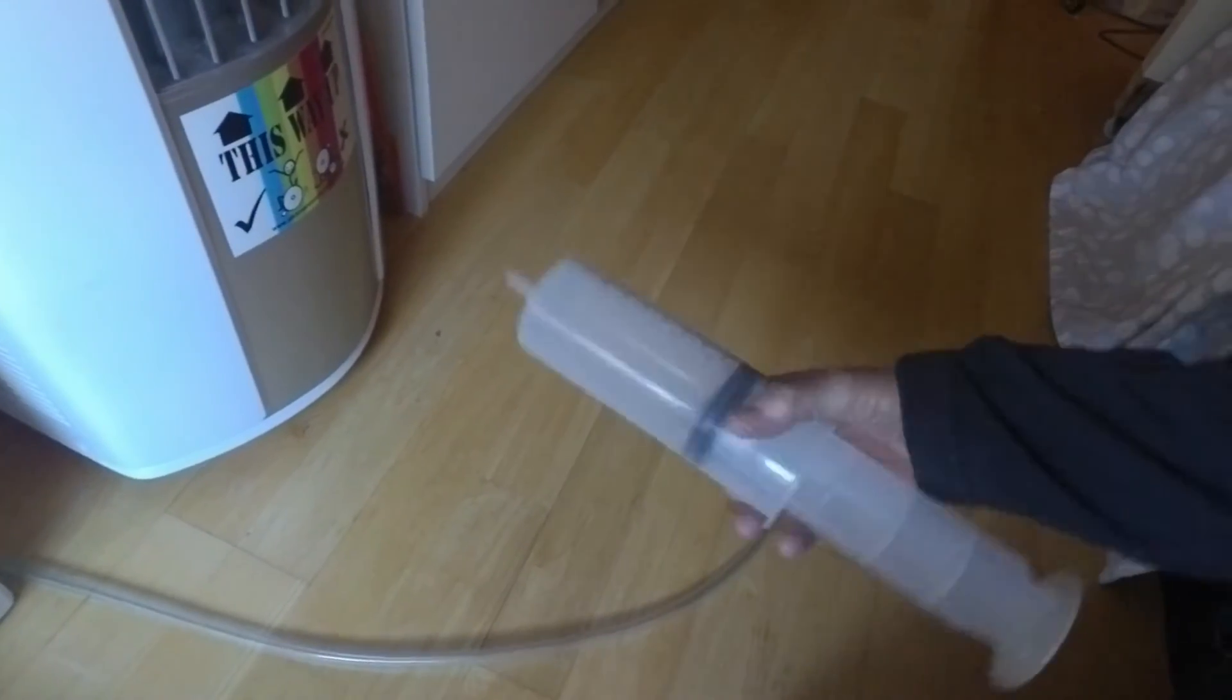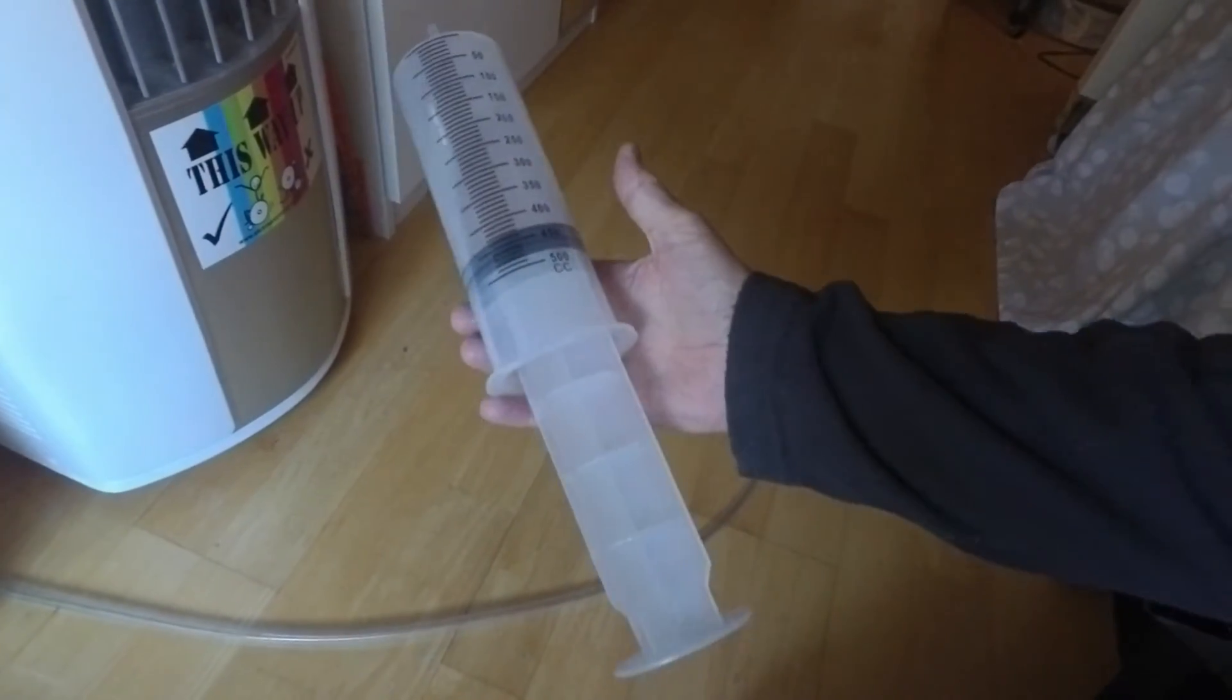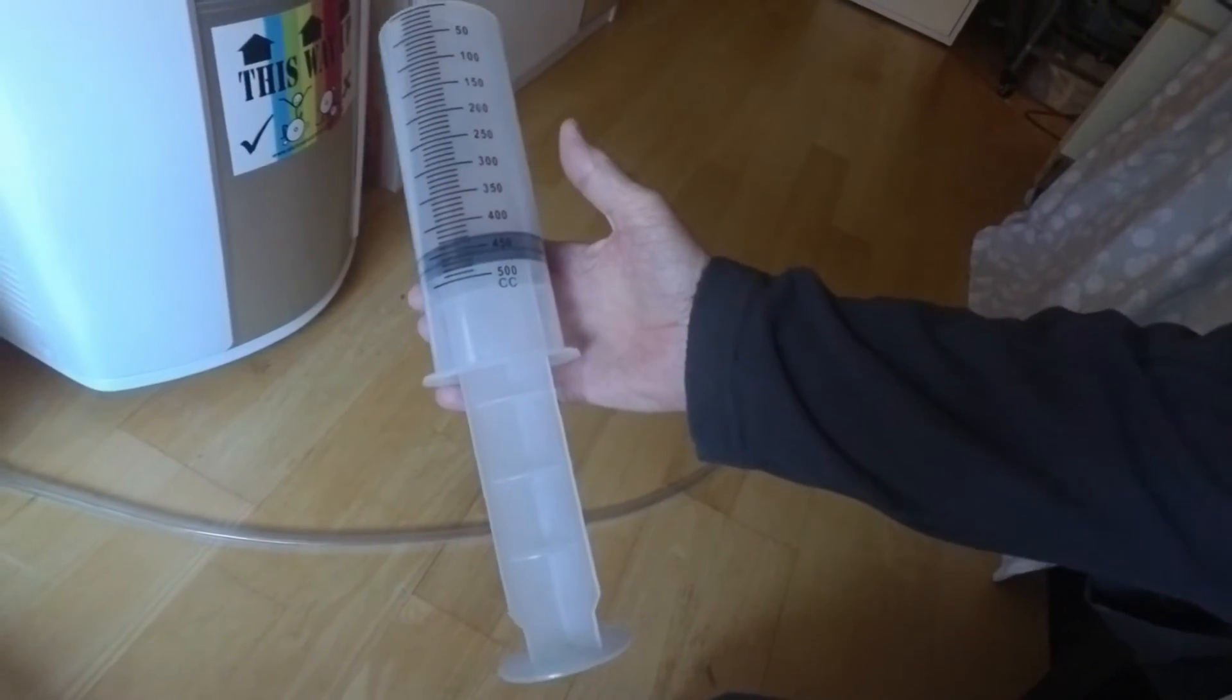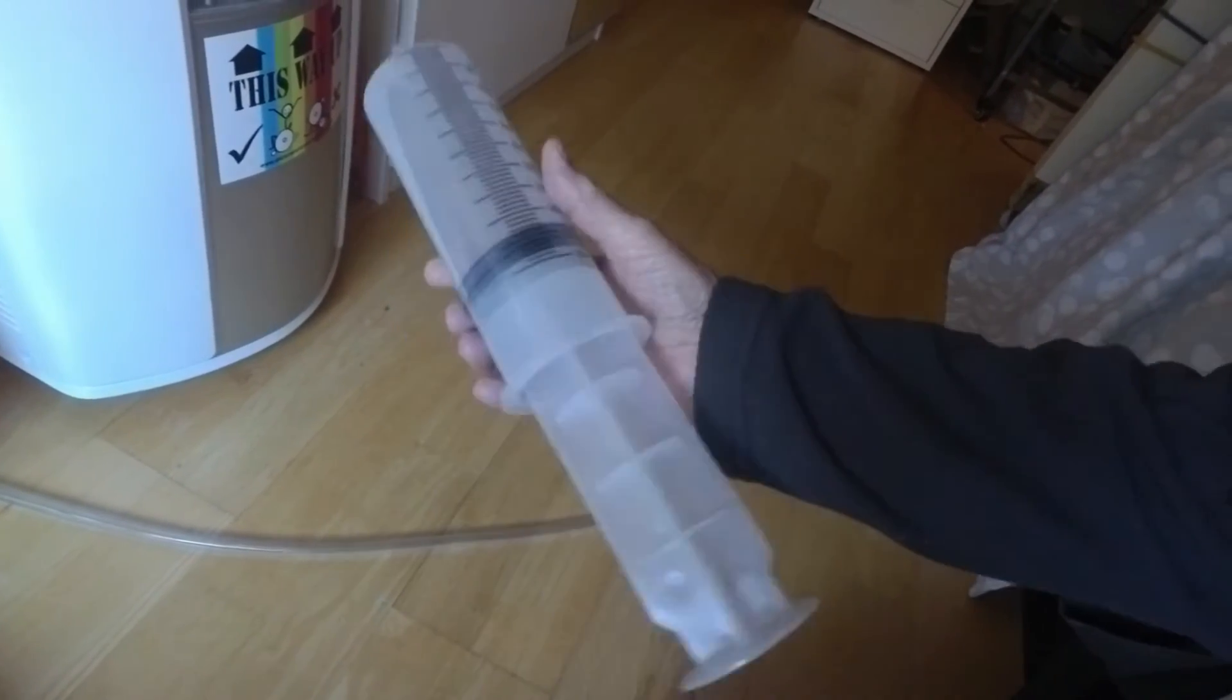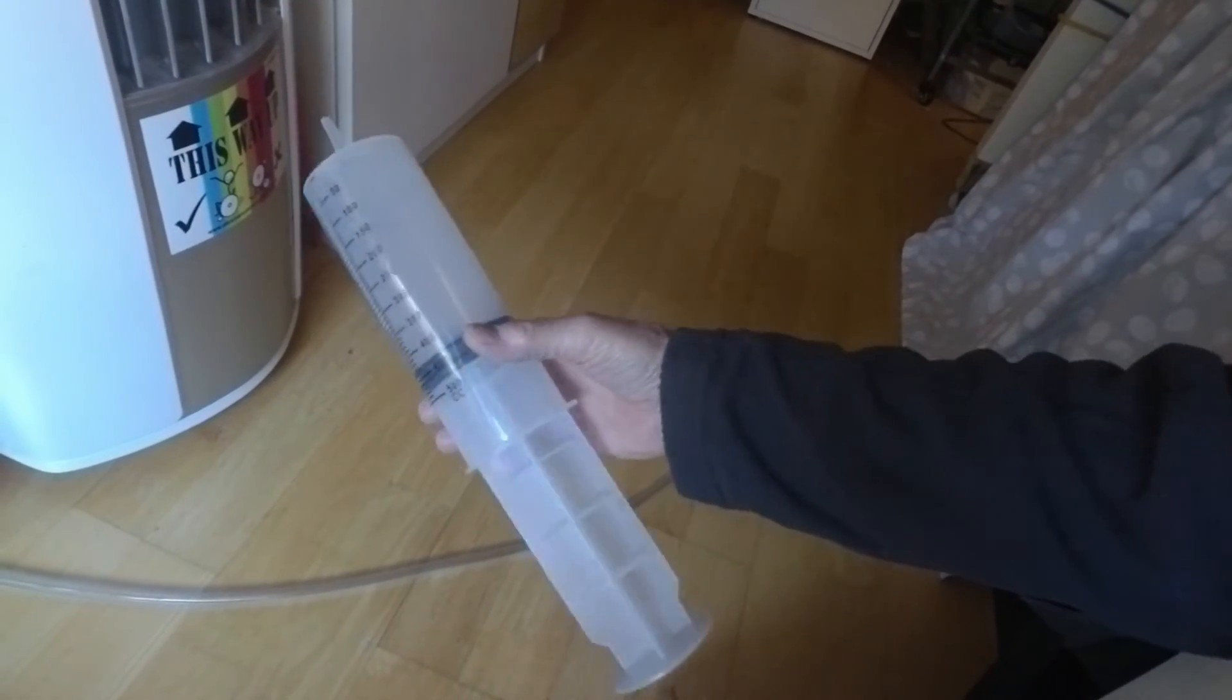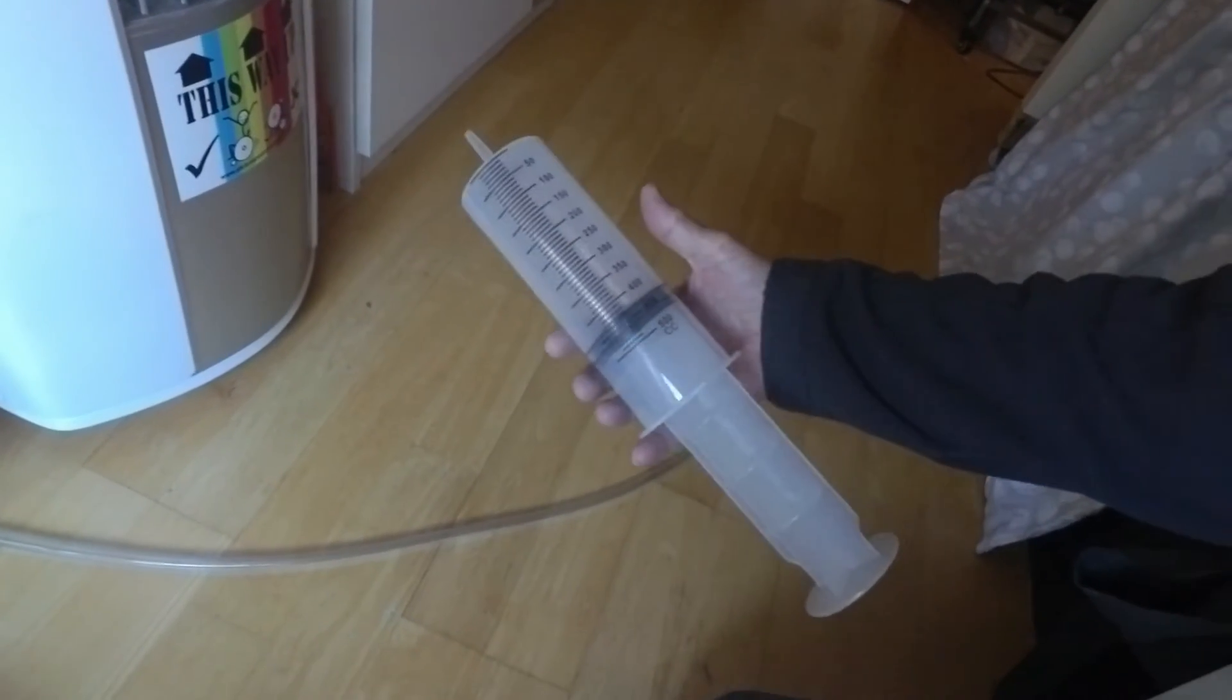So what I've found is there's a much better way of doing it: just buy a big syringe. I mean, this is 500 milliliters, half a liter, and not very expensive off eBay. It's less than five pounds, I think.